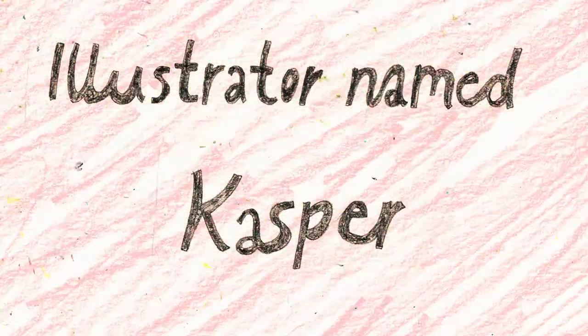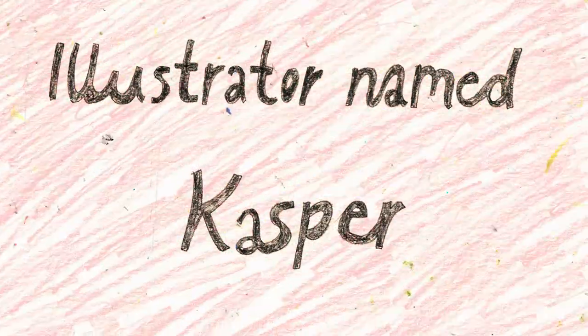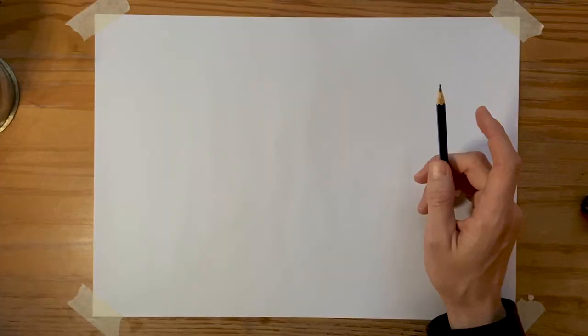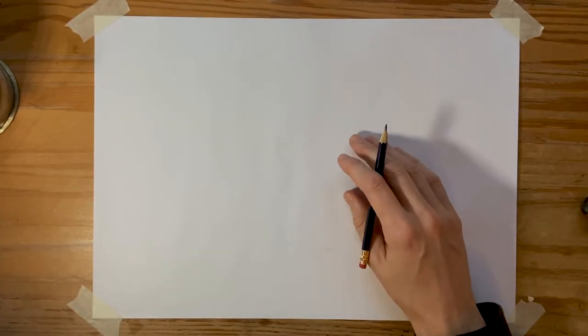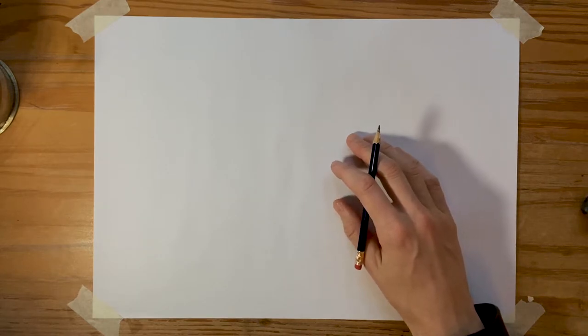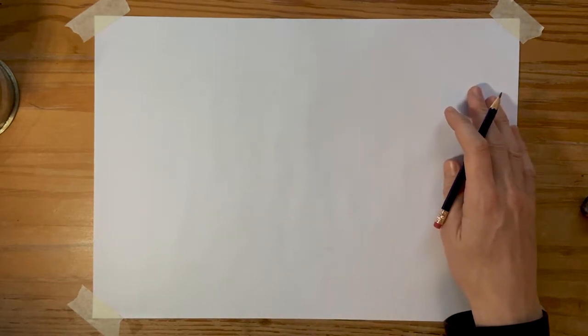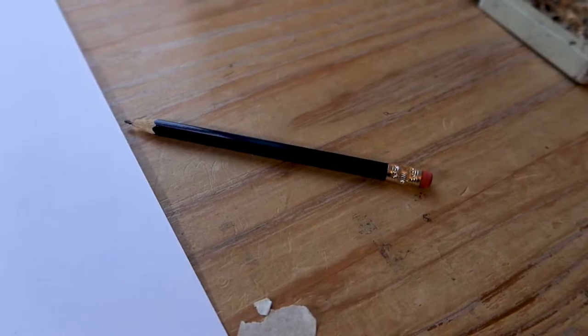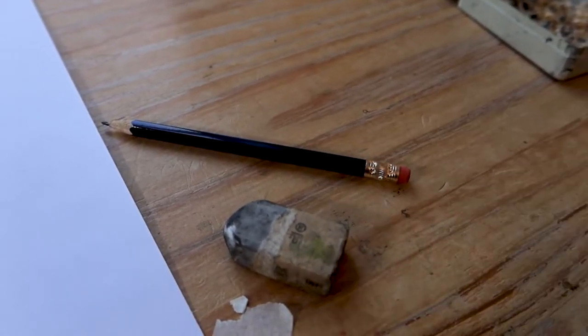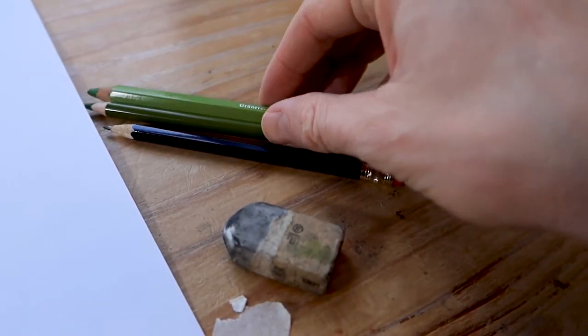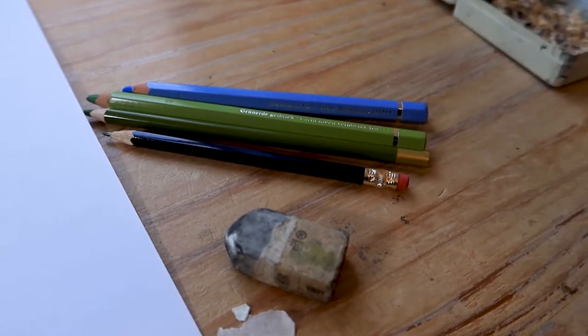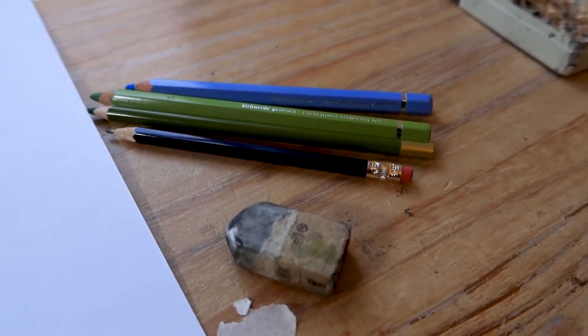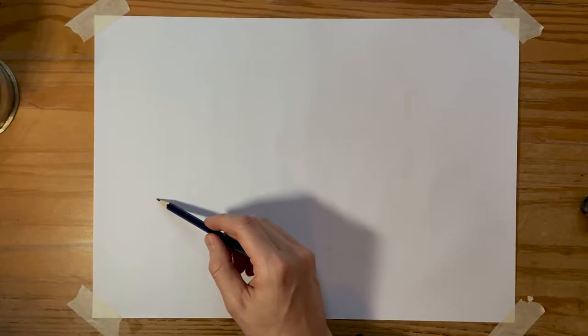Hello everyone and welcome to another draw-along video. Today we will be drawing an animal that's probably most famous for being very laid back. We will draw a sloth. I will use a simple pencil, an eraser, and a couple of color pencils here, green and blue. You can also choose to use other colors that you might fancy. Let's draw.